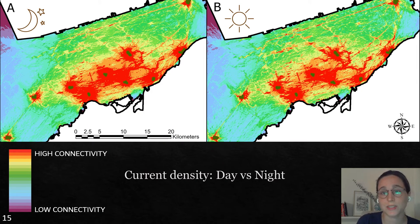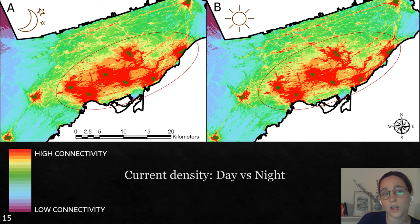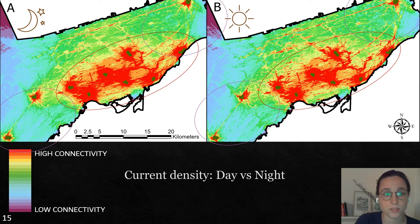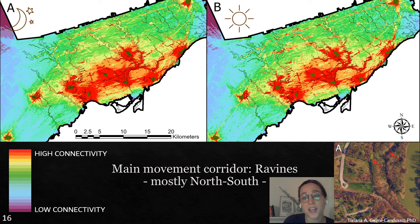Here are the maps that Circuitscape gave us. The difference between night and day is not as obvious as in the resistance layer. I want you to notice that the center is highly connected, while the patches on the edges are isolated. The first feature that is very obvious is that the main movement corridors are ravines. Ravines are outlined in black on the maps, and you can see that mainly, when there's a ravine between two patches, that is the preferred movement corridor.